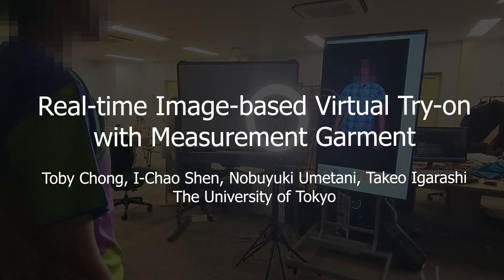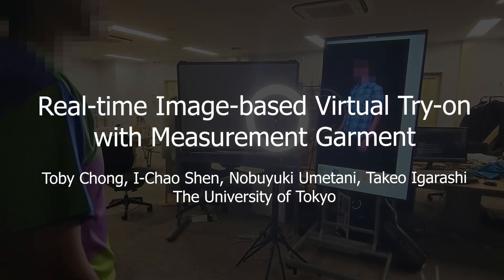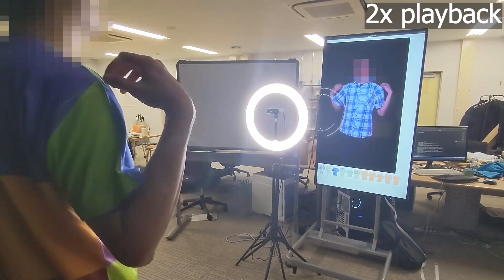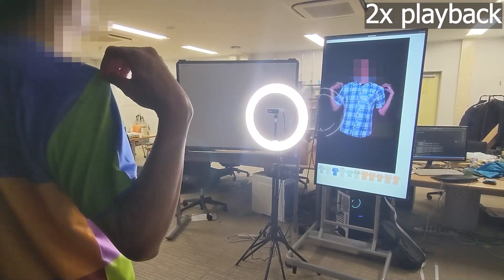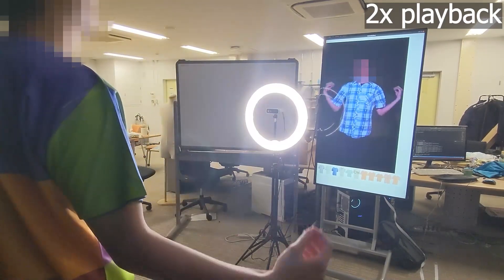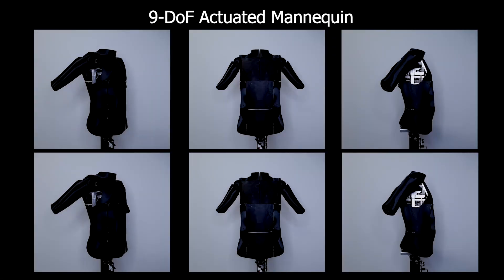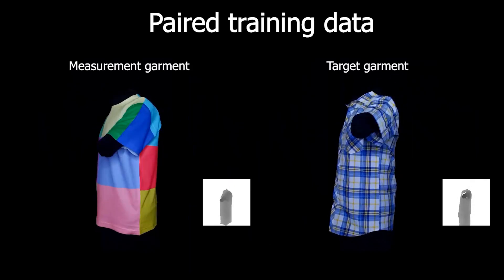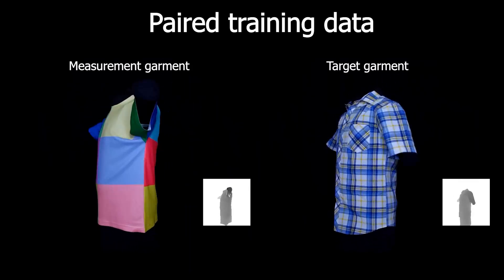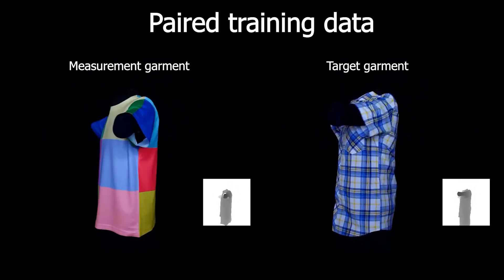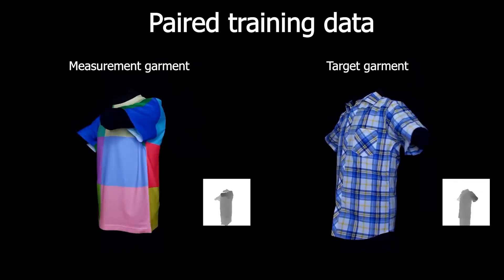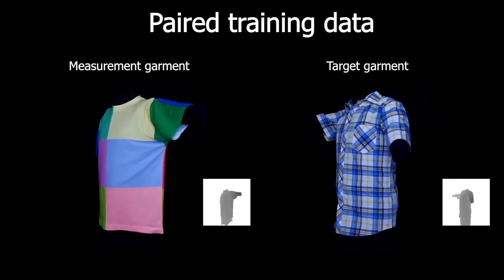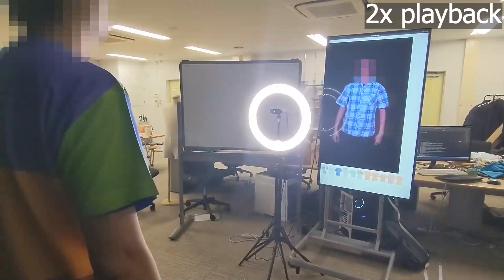Per Garment Capture in Synthesis for Real-Time Virtual Try-On. We introduce a virtual try-on system that allows real-time interactive garment try-on. Our capturing pipeline consists of an actuated mannequin. We captured pair data for a measurement garment, a specially designed t-shirt, and a target garment — the piece of garment that we want to perform virtual try-on.